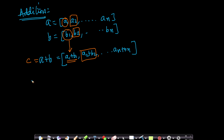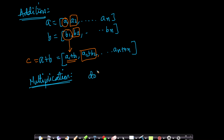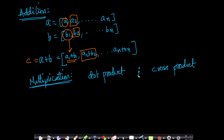The immediate question is whether there is something like multiplication, since we learned that concept in simple algebra. For vectors, there are actually two types of multiplications: the dot product and the cross product. We do not use the cross product much in machine learning, so I will focus on the dot product.